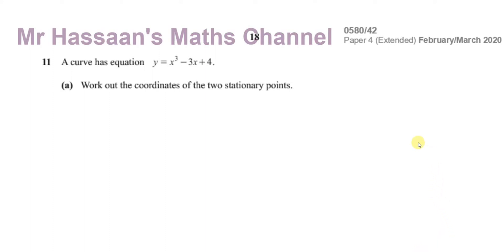Welcome back to Mr. Hassan's Math Channel. I am now going to go through question number 11 of Paper 4 of the February-March 2020 IGCSE Cambridge paper, code 0580. This is Paper 4-2, a paper that did not take place because of COVID in February-March 2020. This is for the Indian region and the examining board released it for revision purposes.